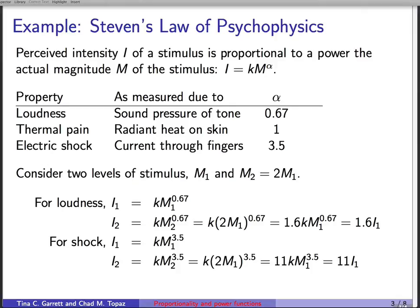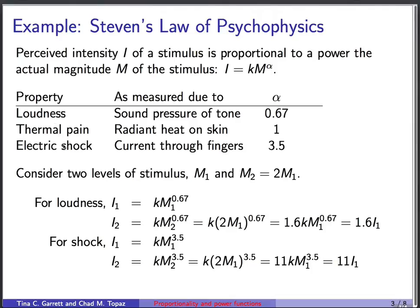To help you understand the significance of data obeying a power rule or a power function, I want to do a quick example that's called Stevens' law of psychophysics. And please don't take the word law too seriously here. This is something from experimental psychology. And what's done is that a subject is given a stimulus. And this stimulus can pertain to examples such as loudness, thermal pain, or electric shock.